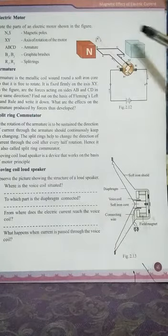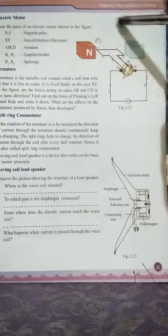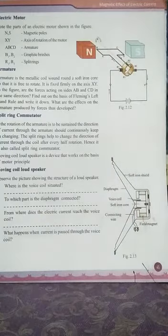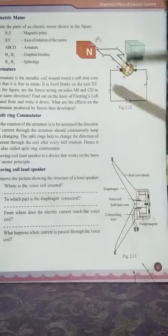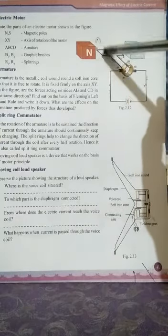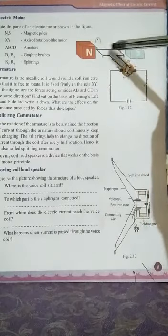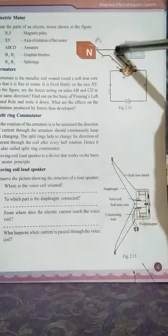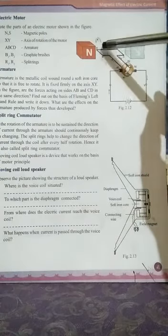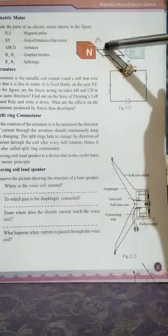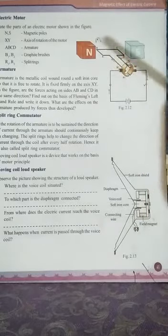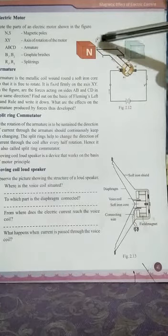Here you can see the parts of an electric motor. The north and south poles of a U-shaped magnet are shown. You can see a rectangular frame on which conducting wire is fully wound — this is the coil. The rectangular frame A B C D on which conducting wires are wound is known as the armature. So one part is the field magnet and another is the armature.